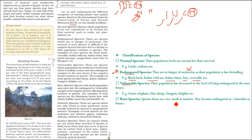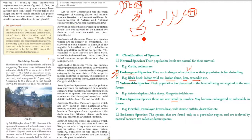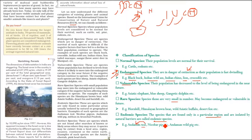Endemic Species are those found only in a particular region, isolated by natural barriers. For example, in the Andaman and Nicobar Islands you find the Andaman teal only in Andaman, and the Nicobar pigeon only in Nicobar — you will not find them anywhere else. There is also a wild pig found only in the Andaman Islands.